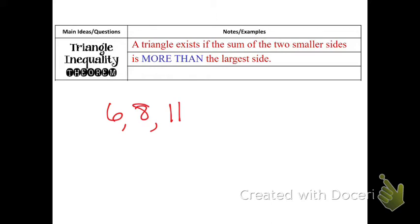Well, the triangle inequality theorem says the two smaller sides have to add up to more than the third side. So six plus eight is 14. Is that more than 11? Yes. So then that would make a triangle.